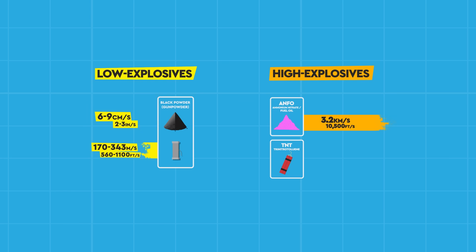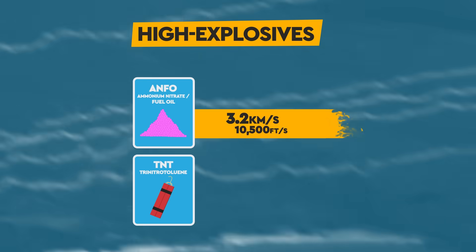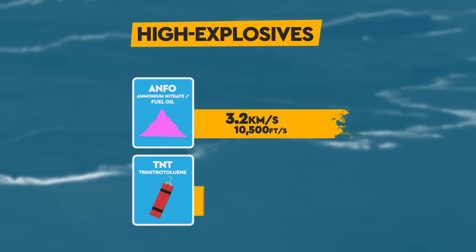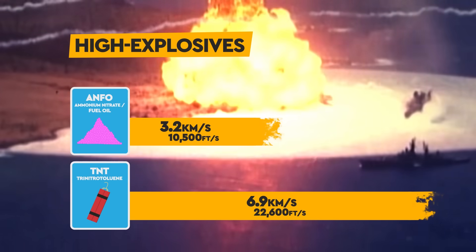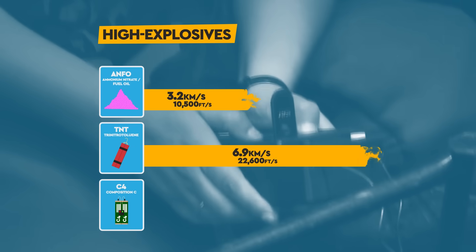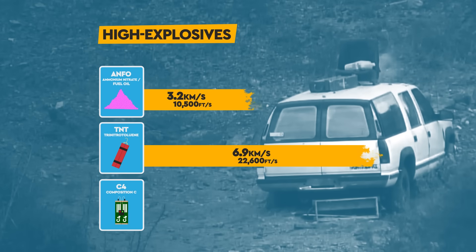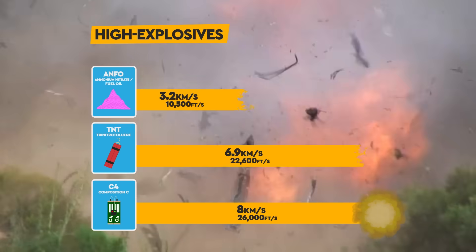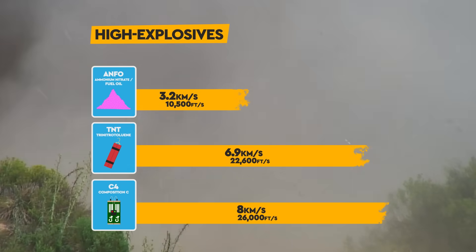For instance, while the explosive known as ANFO explodes at around 3.2 kilometers per second, almost 10 times faster than the speed of sound, it is still considered to have only a low to moderate velocity for a high explosive. Trinitrotoluene, also known as TNT, is at least twice as fast as ANFO, exploding at a rate of 6.9 kilometers per second. C4, another well-known high explosive, explodes at roughly 8 kilometers per second. So, yeah, pretty fast.